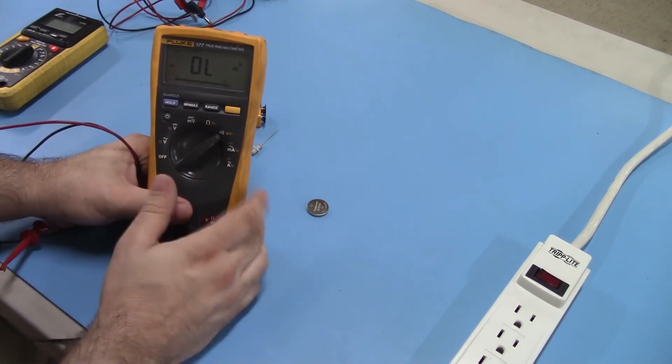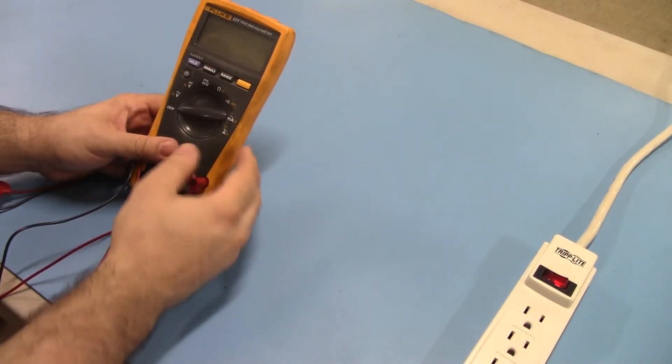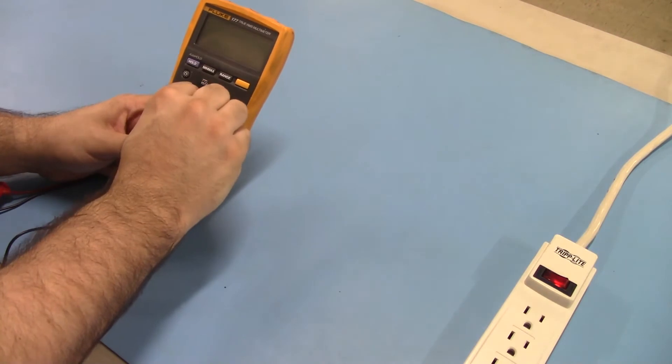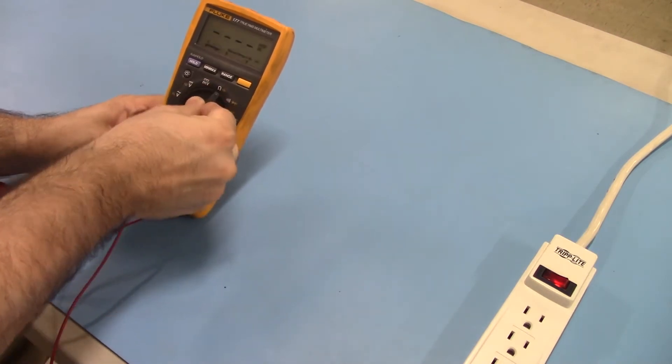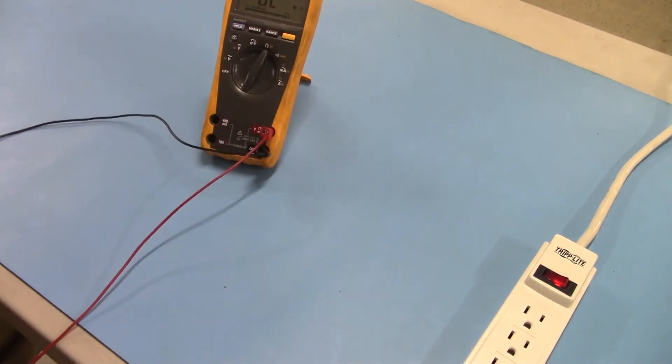Alright, so let's actually see how to use this thing. For measuring your resistance, very easy on this meter. Flip it to your ohms scale there. Set that there.